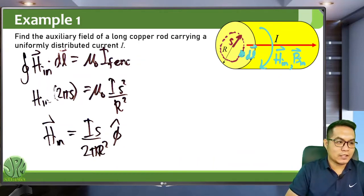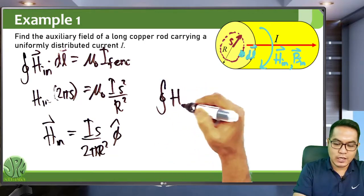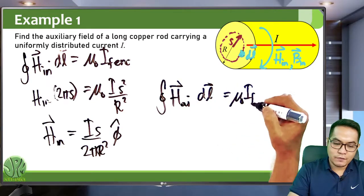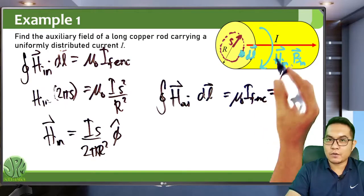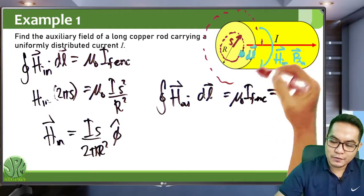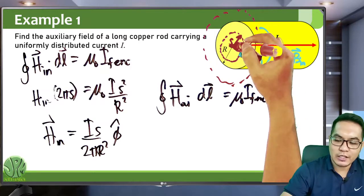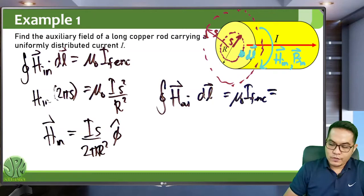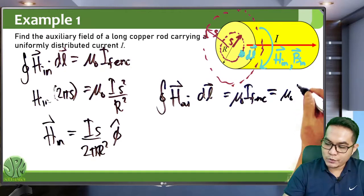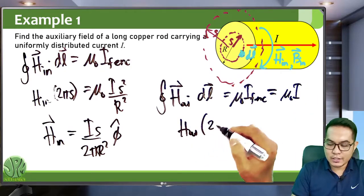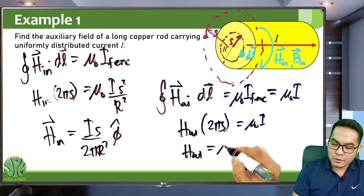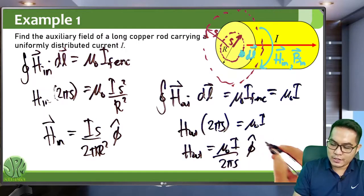For the auxiliary field outside, we use Ampere's law for magnetized objects again. Taking an Amperian loop outside with radius S, the total free current enclosed is just I. So H_out times 2πS equals I, giving the auxiliary field outside as H_out = I/(2πS) in the phi-hat direction.